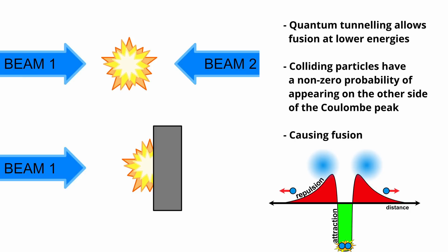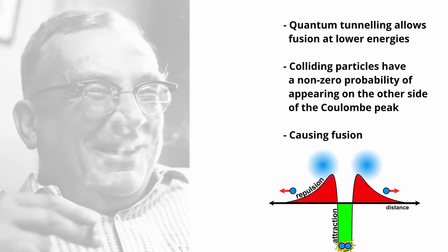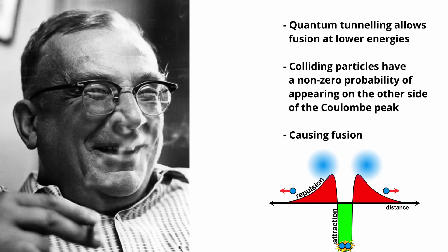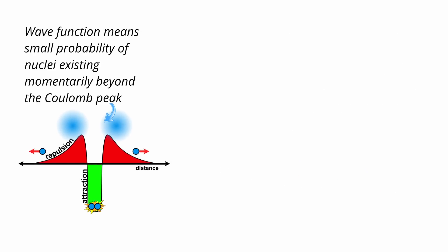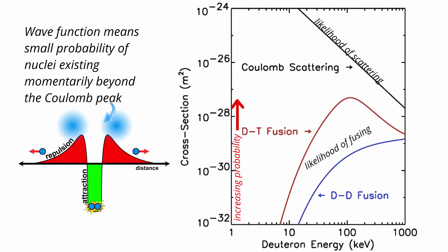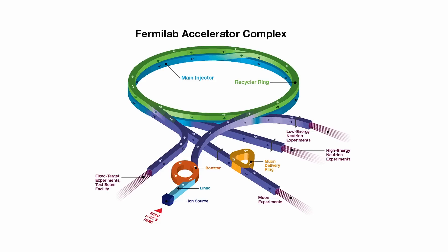Quantum tunneling, first theorized in the late 1920s by George Gamow and others, provided an elegant explanation. Nuclei could probabilistically tunnel through the energy barrier rather than surmounting it. This concept was incorporated into calculations of fusion cross sections with a gamma factor quantifying the likelihood of tunneling as a function of energy.